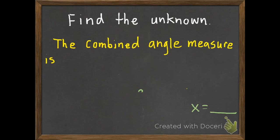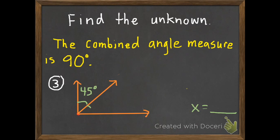Number three. The combined angle measure is 90 degrees. I should have a square right there. What is x when one of the angles is 45 degrees?